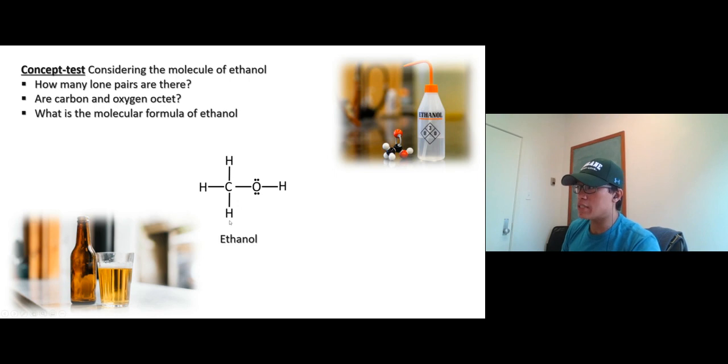All right try this guy. This is methanol. Same thing. How many lone pairs are there? Well two lone pairs right there. Are carbon and oxygen octet? Start with carbon. Let's count number of electrons around carbon. One two three four five six seven and eight. So yes, octet. Carbon is octet. Now oxygen, try oxygen: one two three four five six seven eight. Yes.